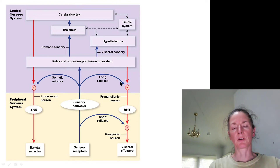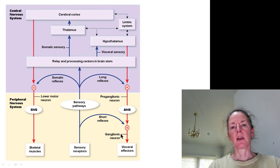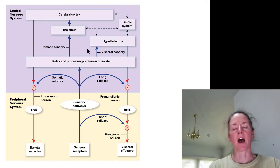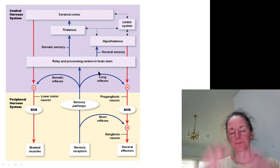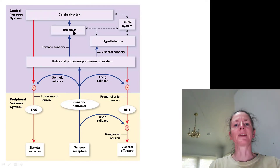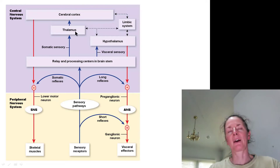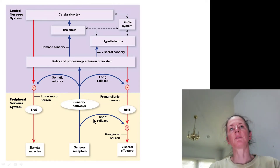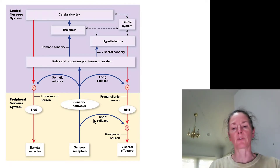Long reflexes are mediated through the CNS; short reflexes are mediated entirely within the autonomic ganglia. The diagram also shows the high degree of interconnectedness of autonomic centers. Remember that the seat of the autonomic center is in the hypothalamus and other brain structures. We have quite a bit of top-down, higher-order thinking influencing our reflexes — reflexes can be attenuated, depressed, or enhanced depending on emotional states and states of arousal.